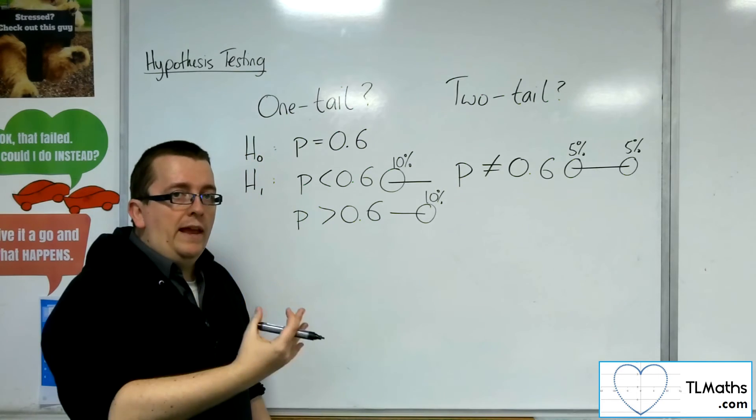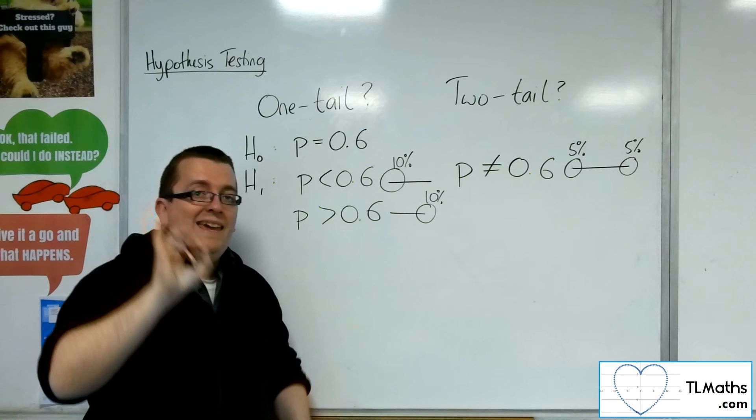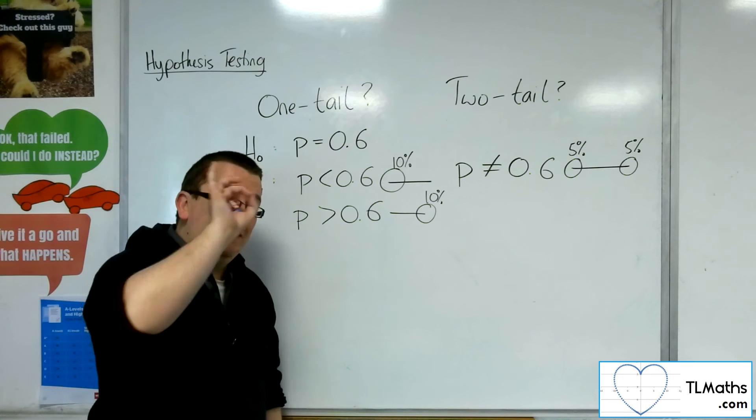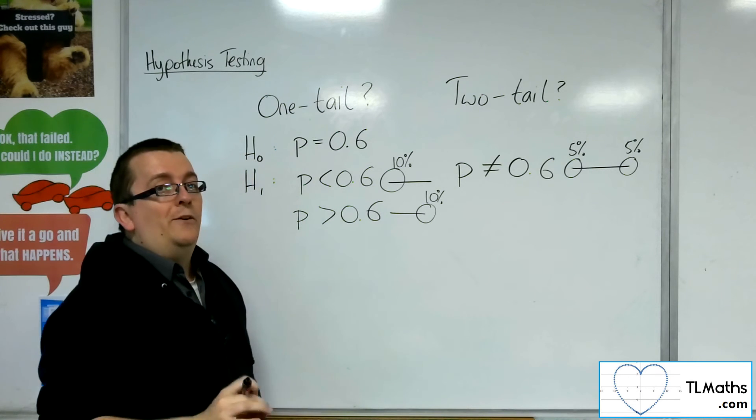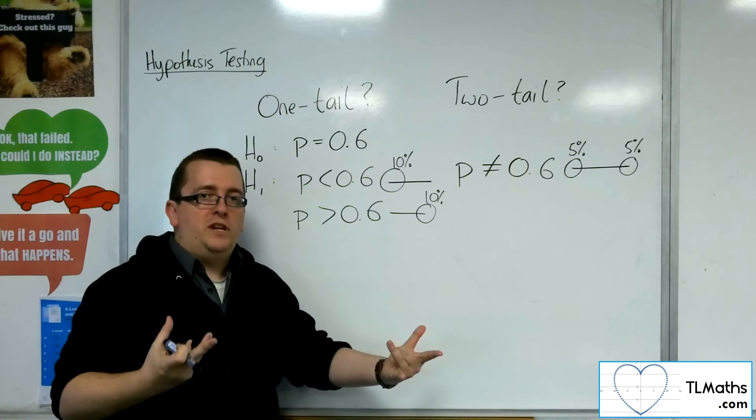And so the two-tail test, what will happen is you'll look at both ends. And the key thing that happens that is different to the one-tail is that you must halve the significance level, because it is shared over the two tails.